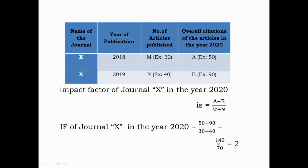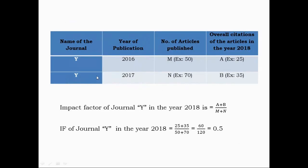Similarly, for journal Y published in 2016, M is the number of articles and A is the number of citations observed in 2018. N is the number of articles published in 2017, and B is the number of citations observed in 2018. The impact factor of journal Y is A plus B divided by M plus N, which equals 25 plus 35 divided by 50 plus 70, giving a final impact factor of 0.5.